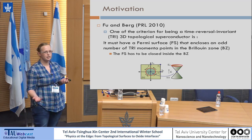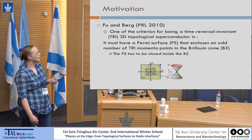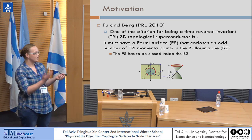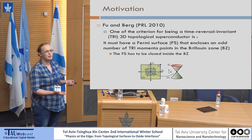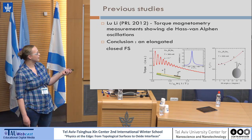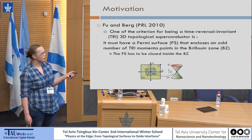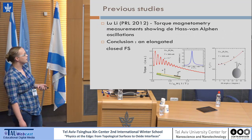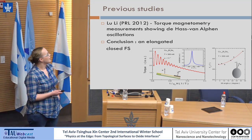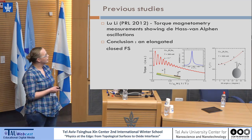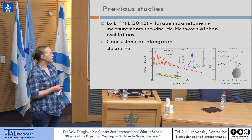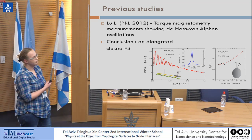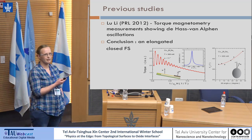One criterion important to our work is that the Fermi surface must be closed inside the Brillouin zone. For copper-doped bismuth selenide, this means the Fermi surface should enclose the Γ₁ point at the centre of the Brillouin zone. There was work by Luli's group on the de Haas–van Alphen effect, which showed that the Fermi surface looks like a closed ellipsoid up to their measurement range, suggesting it could comply with the Fu-Berg criteria.